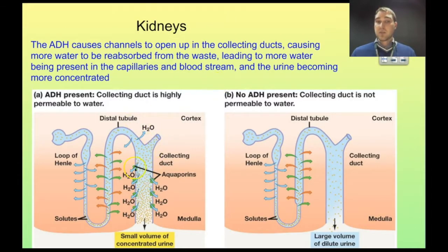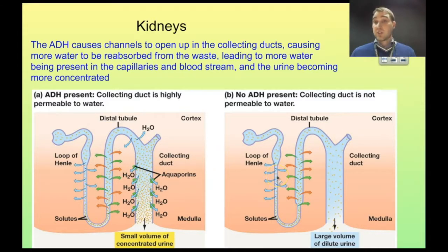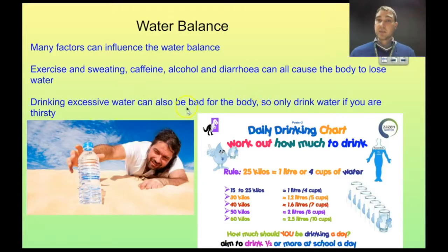The hormone causes channels in the collecting duct called aquaporins to open up — aqua means water, porins means hole, so these are water holes. More water comes out of the collecting duct and goes back into the capillaries, meaning you get a small volume of highly concentrated urine. This keeps the water in your body rather than losing it through urine. If you're drinking two litres of water, your body reduces the amount of antidiuretic hormone produced, which closes off the aquaporins so more water passes through the collecting ducts and into the bladder — producing more dilute urine. If you do a lot of exercise and sweat a lot, you're losing water from your skin, so your kidneys will redirect water back to your blood, producing very concentrated urine.